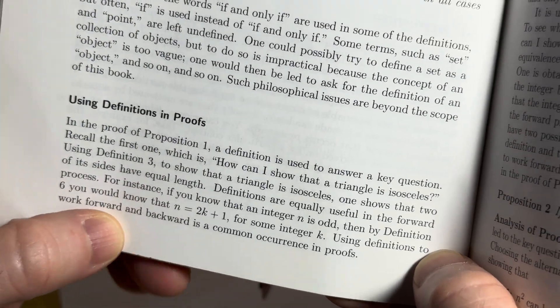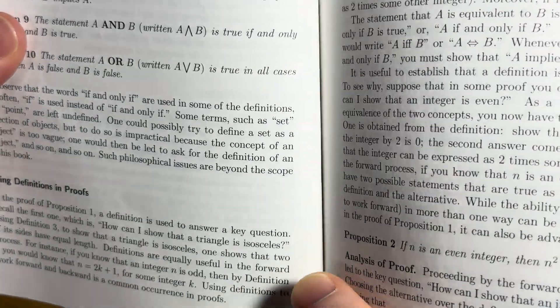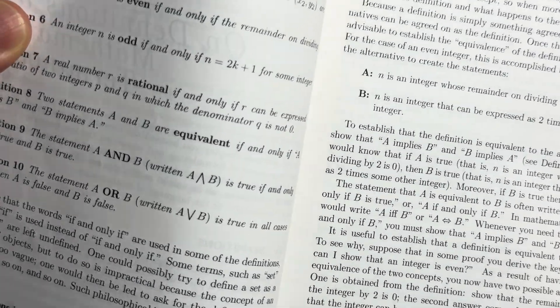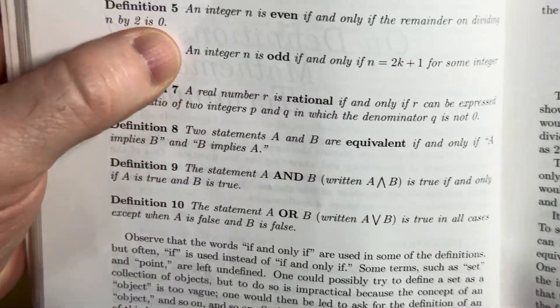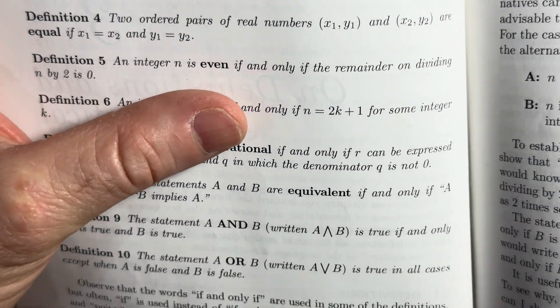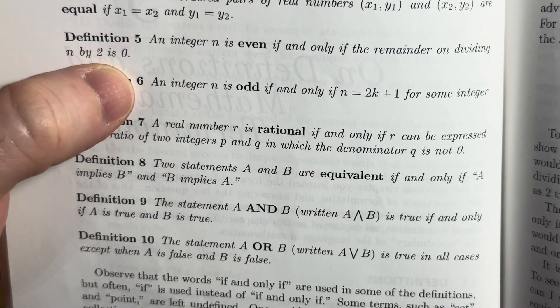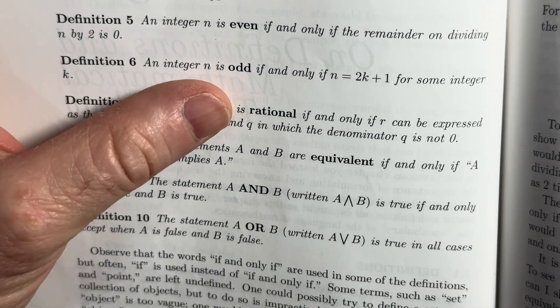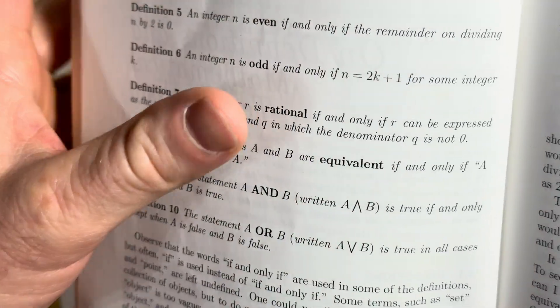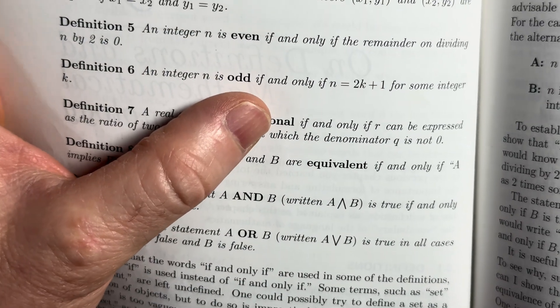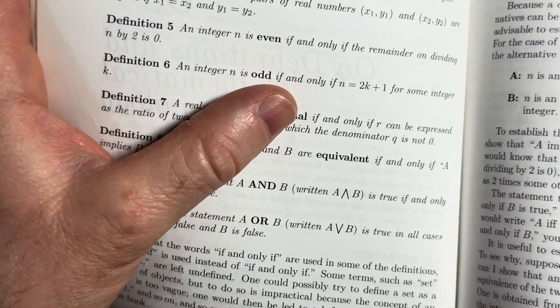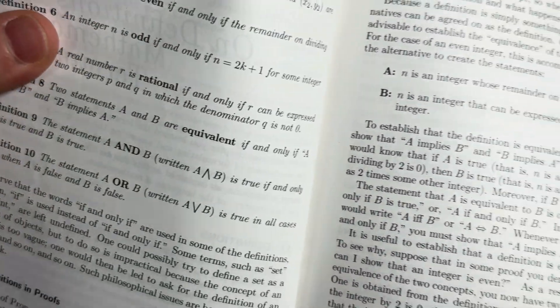Yeah, so it's not necessary to say if and only if here, like here it says definition five, an integer n is even if and only if the remainder on dividing n by two is zero, or an integer n is odd if and only if n equals two k plus one for some integer k. You can just say if, and it's implied that it's an if and only if statement. So, you don't have to put if and only if in definitions. That's the point.